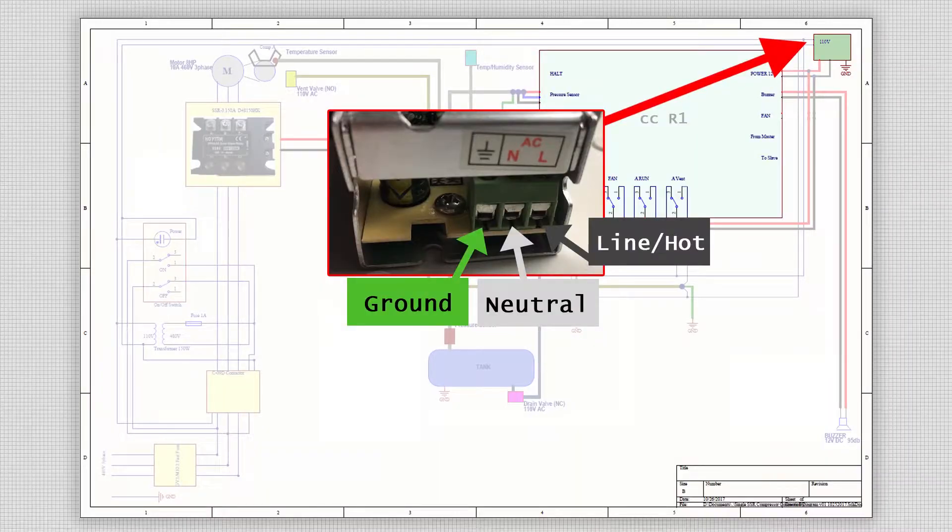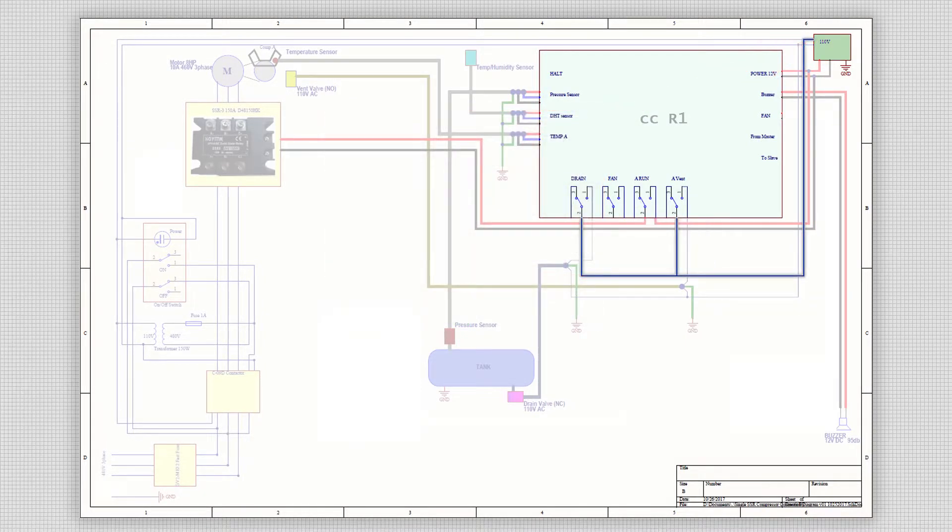Moving on to the AC side of this installation, we will wire in the ground, neutral and hot wires to the power supply. As both the drain and vent valves operate on 110 volts AC, we will split the hotline that goes to the power supply and connect it to the common connector on the compressor controller for both the vent and drain connections.